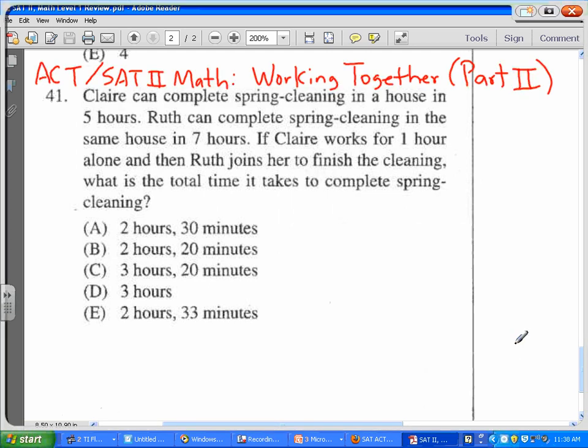Okay, so we have number 41 from the SAT II Math, could be an ACT problem: Working Together Part 2. Number 41 on the test is that Claire can complete a spring cleaning job in five hours working alone. Ruth can complete the same job in seven hours. If Claire works for one hour alone, so she has...